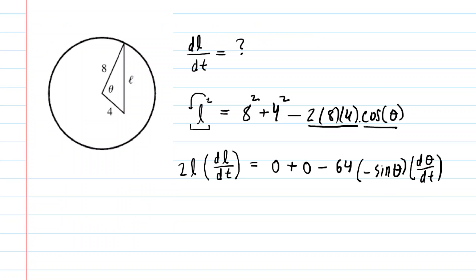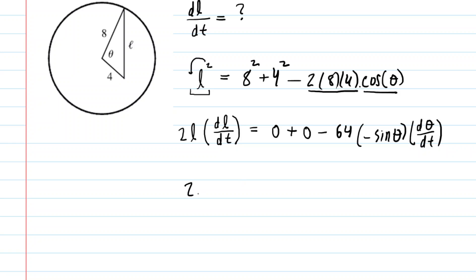So this is our equation. Let's simplify it a little bit. On the left side, we can keep this 2L dL/dt. These zeros here are inconsequential. We're multiplying a negative 64 by a negative sine, so this is going to give us positive 64 sine of theta multiplied by d(theta)/dt.